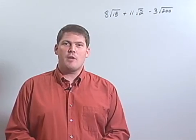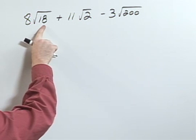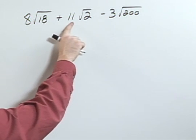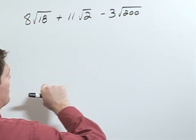Perform the indicated operation on the radical expression: 8 times the square root of 18 plus 11 times the square root of 2 minus 3 times the square root of 200.